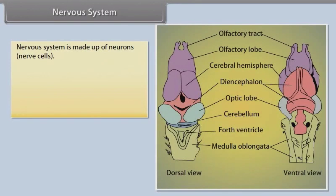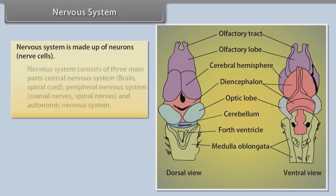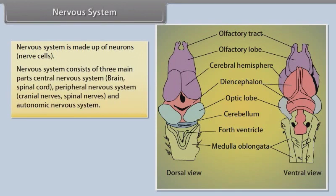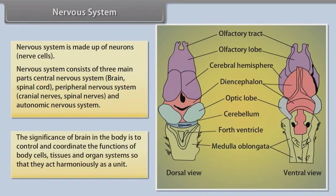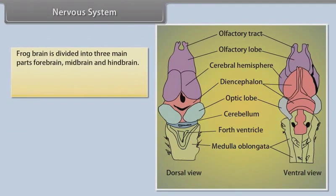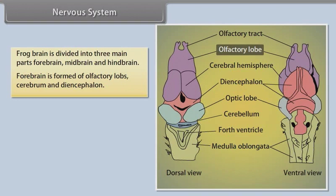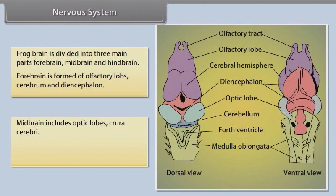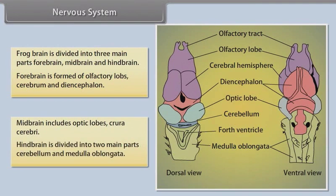The nervous system is made up of neurons (nerve cells) and consists of three main parts: central nervous system (brain and spinal cord), peripheral nervous system (cranial nerves and spinal nerves), and autonomic nervous system. The brain controls and coordinates the functions of body cells, tissues, and organ systems so they act harmoniously as a unit. The frog brain is divided into three main parts: forebrain (olfactory lobes, cerebrum, and diencephalon), midbrain (optic lobes and crura cerebri), and hindbrain (cerebellum and medulla oblongata).